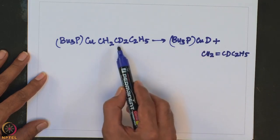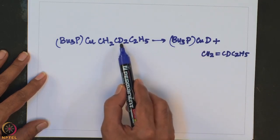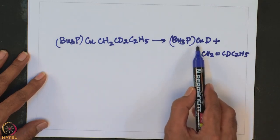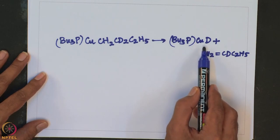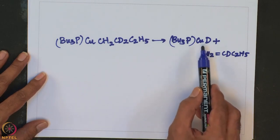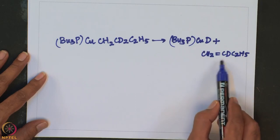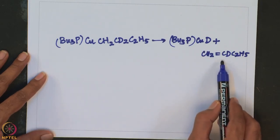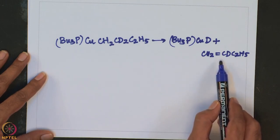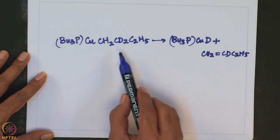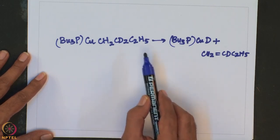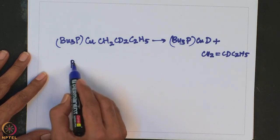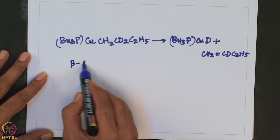In a deuterium-labeling experiment, the beta hydrogens are replaced by deuterium. As a result, one can expect the formation of deuteride (Cu-D) instead of hydride (Cu-H), and this can be verified by NMR. By analyzing the byproduct compound, one can confirm that the responsible reaction is beta-hydrogen elimination. This reaction can also be made reversible — one can also make beta-hydrogen elimination reversible.